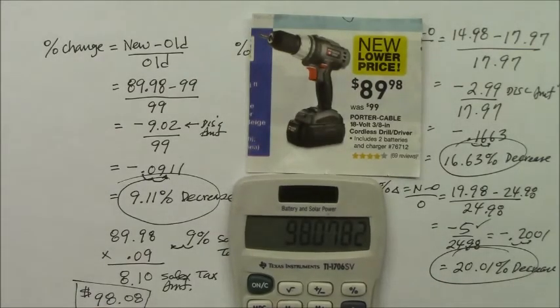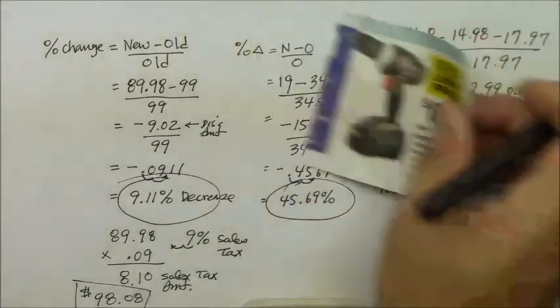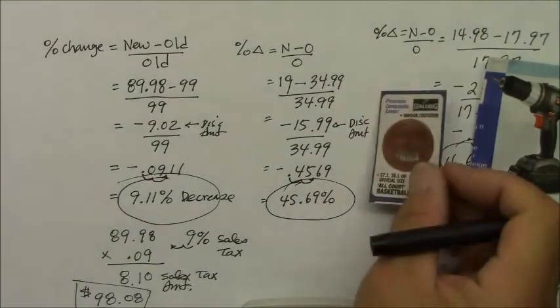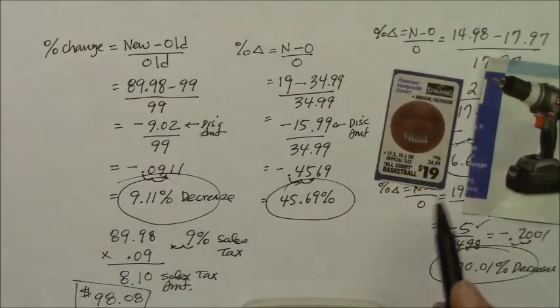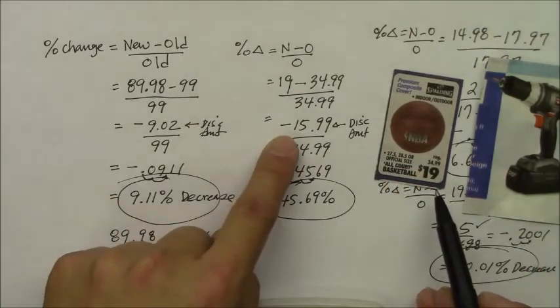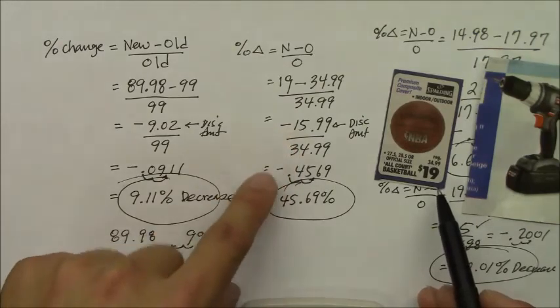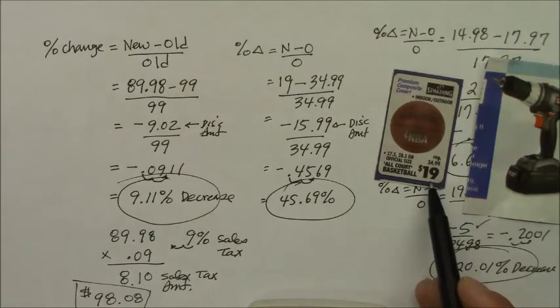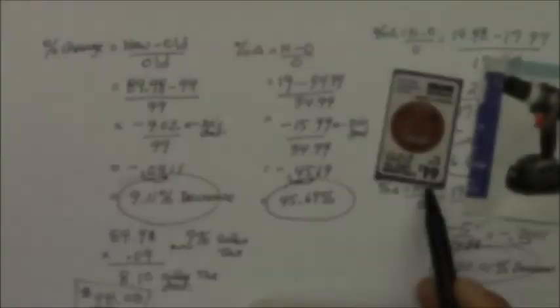So now do you think you could figure out the total after price for this basketball? First of all, we figured out the discount amount, $15.99. That's a good discount. And the sales price is $19. But what is the final out the door price with the sales tax? Why don't you figure it out? Okay.